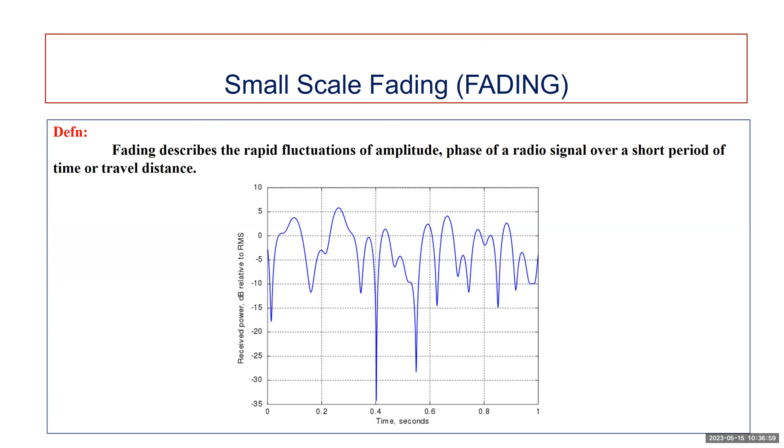Generally, the fading or small scale fading describes the rapid fluctuations of the amplitude and phase of a radio signal over a short period of time or short period of travel distance.